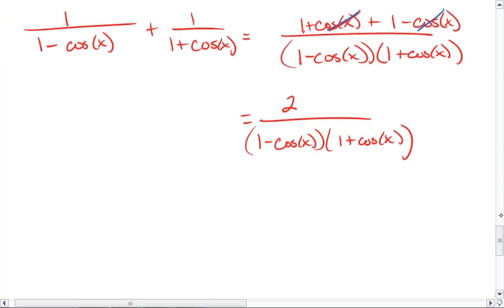At this point, I would multiply through your denominator because there's nothing that's going to cancel with the numerator. This gives us 1 minus cosine squared x.